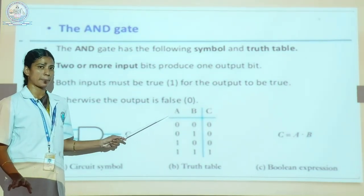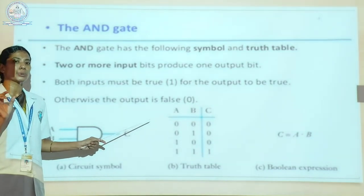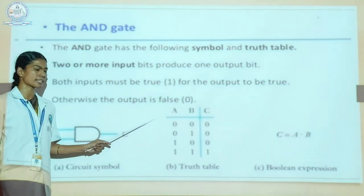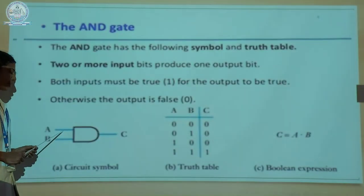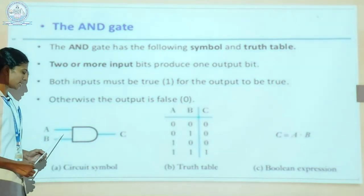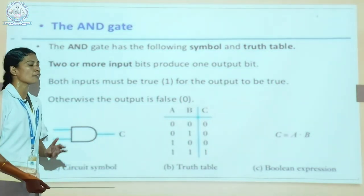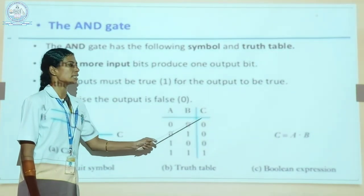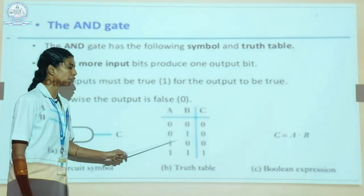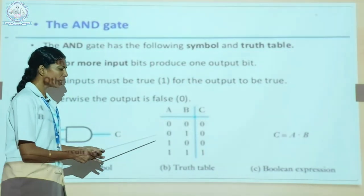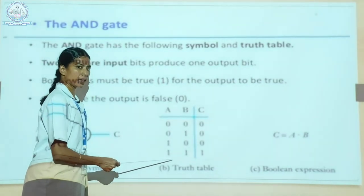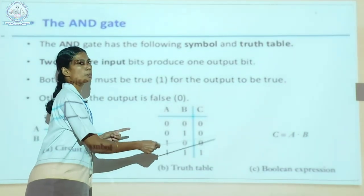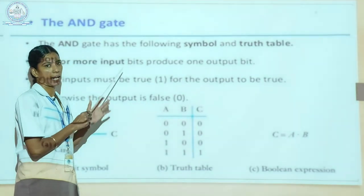What is the formula for the truth table? The combination of input signals is 2 power n, where n represents the number of input signals. Here the number of input signals is 2, making the combination 4 input combinations. The 4 combinations have A and B as inputs, and C as the output. The output is high only when all inputs are high. If any one of the inputs is low, the output is also low. That is the truth table for the AND gate.